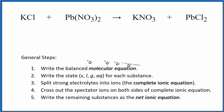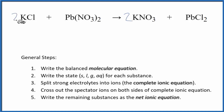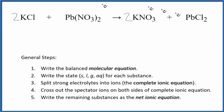First thing we need to do is balance the molecular equation. I can see I have two nitrate ions here and just one here, so I'm going to put a 2 in front of the potassium nitrate. That gives me two potassium atoms, so I'll put a 2 here — those are balanced. I now have two chlorine atoms, and two here. I have a lead and then a lead. So this is the balanced molecular equation.